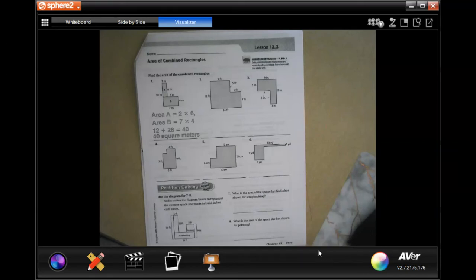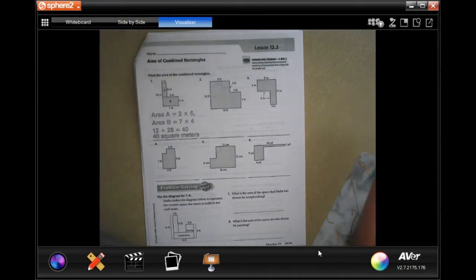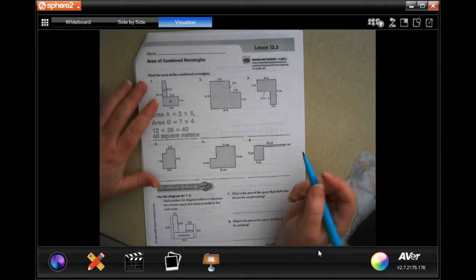Hey y'all, welcome to fourth grade chapter 13 lesson three. We're going to go ahead and get started. We are doing the area of combined rectangles, which means these are odd shapes.